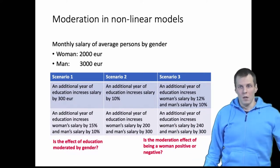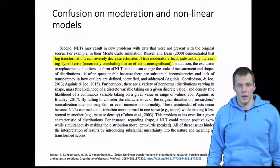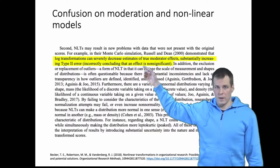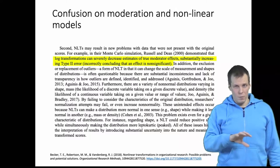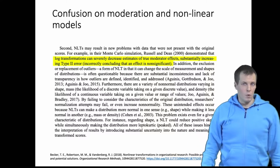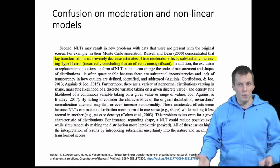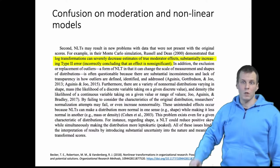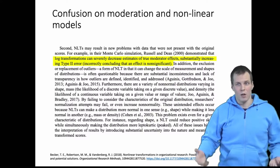There is a lot of confusion around interpretation of moderation effects when you have a transformation involved. For example, a recent organizational research methods paper by Becker and co-authors says that log transformation can severely decrease estimates of true moderation effect substance and increase type 2 error. That's simply not true. It's true that if you multiply two coefficients together, after transformation the multiplied coefficient can have a smaller effect, but when you look at and interpret the results, the moderation effect is there. How you should interpret the results with moderation is always by plotting.